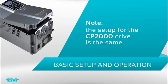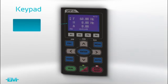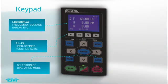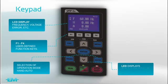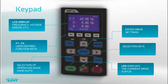The setup for the CP2000 drive is the same. By default, the drive parameters are set up for keypad control using the run and stop keys to operate the drive and the cursor keys to change the speed.